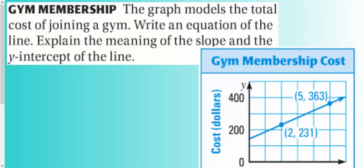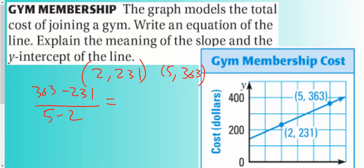The graph models the total cost of joining a gym. Write an equation of the line. Explain the meaning of the slope and the y-intercept. I'm going to take my two points: 2, 231, that's one of the points they give me, and 5, 363. I can do rise over run, but the graph is scaled really bad. So I'm just going to do the slope formula. 363 minus 231 over 5 minus 2. I get 132 over 3, and that should simplify to 43. So that's my slope.